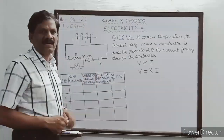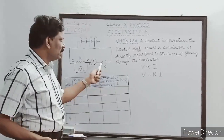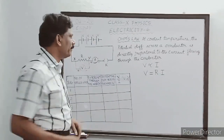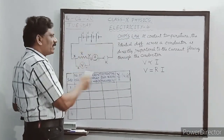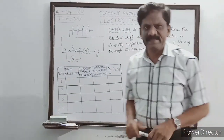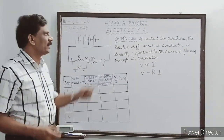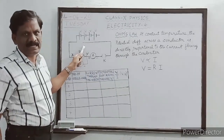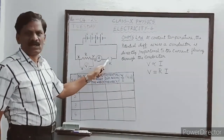Also in series is a device represented by K, which is a plug key or switch. Currently it is open. The other end of the key is also kept open. Is this a closed circuit or an open circuit? It is an open circuit, because the battery's one end and the other end of the key are not in contact. Only when they are in contact can you say the circuit is closed.